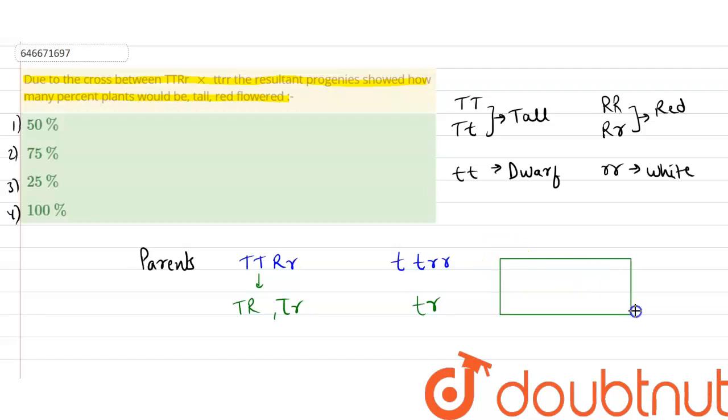We will get here T R, T r, t R, t r. So offspring produced will be Tt Rr and Tt rr. Okay, this offspring is tall and red, this offspring is tall and white.